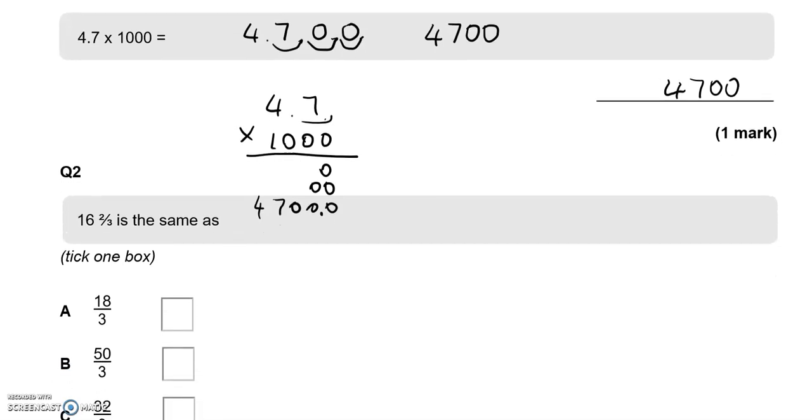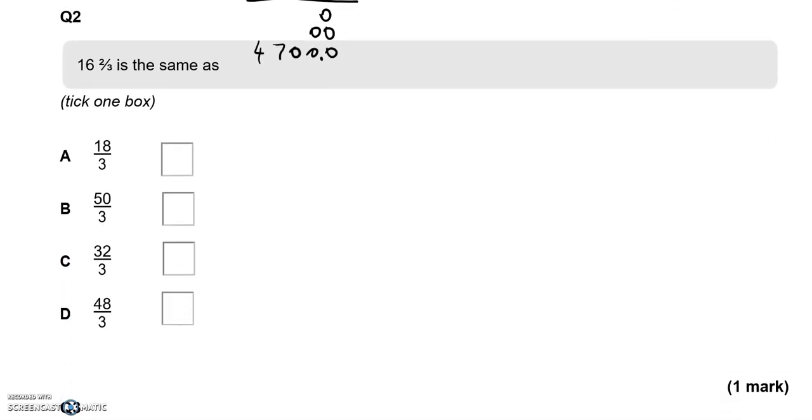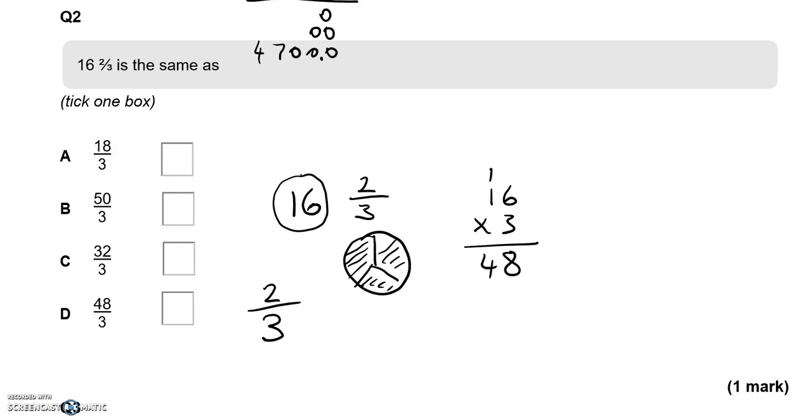In the second question, we've got 16 and 2 thirds is the same as which one of these options? We're converting a mixed number into a fraction. How many thirds do we have in total? We have 2 thirds already. 16 wholes, how many thirds will that be? 1 whole has 3 thirds, so 16 times 3 gives us 48 thirds. Altogether, that makes 50 thirds. So that's option B.